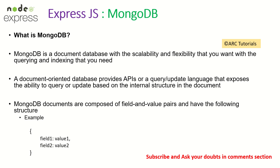MongoDB documents are composed of key-value pairs. MongoDB documents are nothing but JSON documents, or more precisely BSON documents as they are stored. At the heart of it, it's just a key-value pair — you will have a key and a corresponding value. No two documents need be the same; they can be different, and that's the beauty of MongoDB.